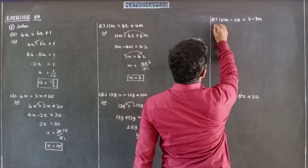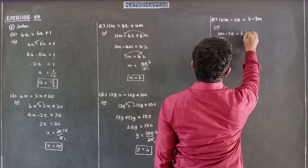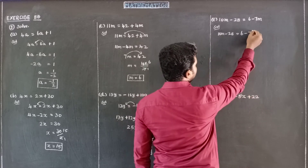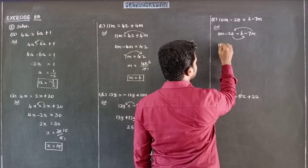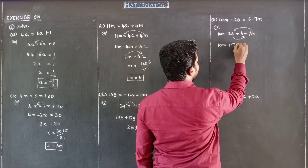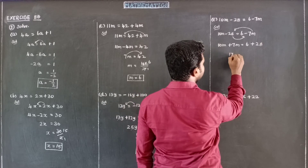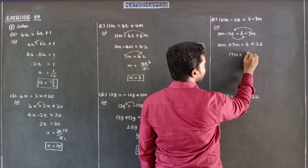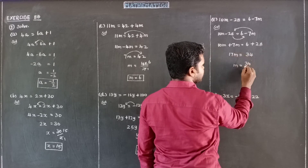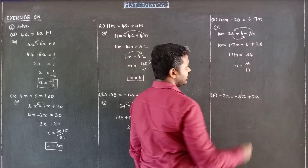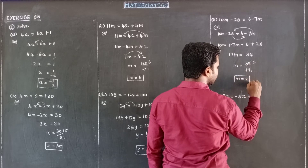Next is subdivision E: 10Y minus 28 is equal to 6 minus 7Y. Bringing minus 7Y to the left side: 10Y plus 7Y is equal to 6 plus 28. So 17Y is equal to 34. Dividing both sides by 17: 2 times 17 is 34. Therefore the value of Y is equal to 2.